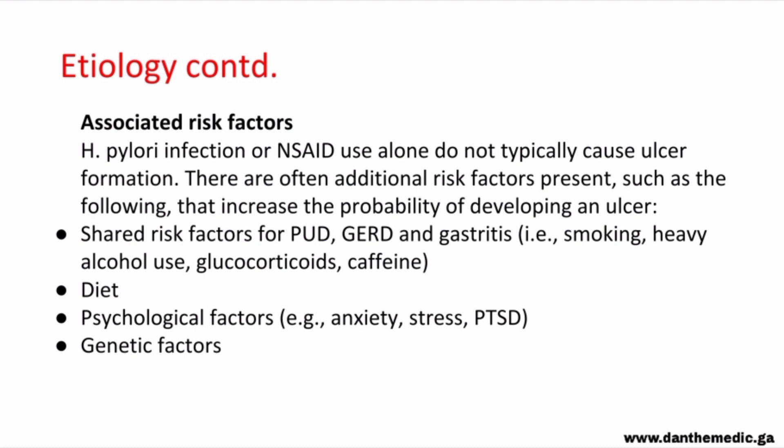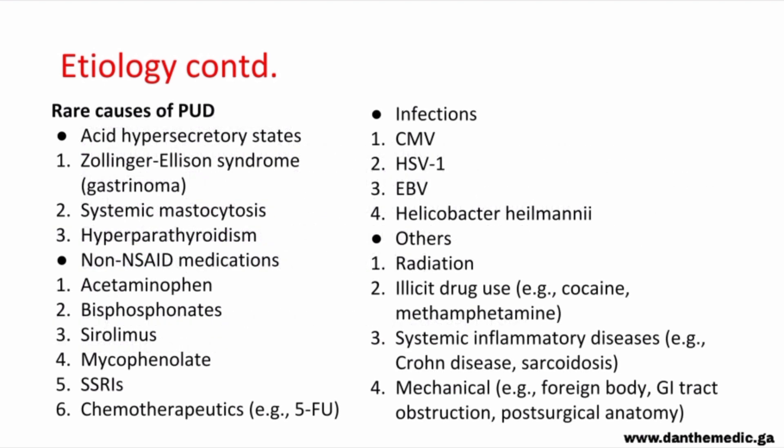Diet can also be an associated risk factor. Psychological factors such as anxiety, stress, and post-traumatic stress disorder, as well as genetic factors, also contribute. There are also some rare causes of peptic ulcer disease, divided into acid hypersecretory states, non-NSAID medications, infections, and others.